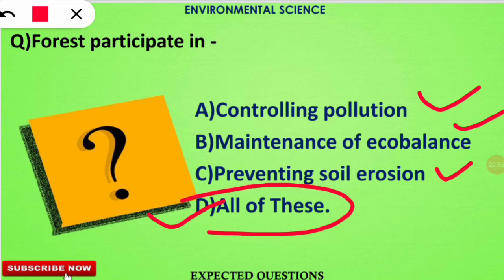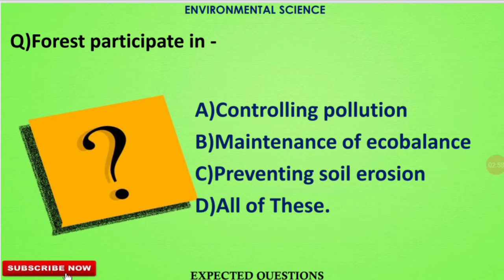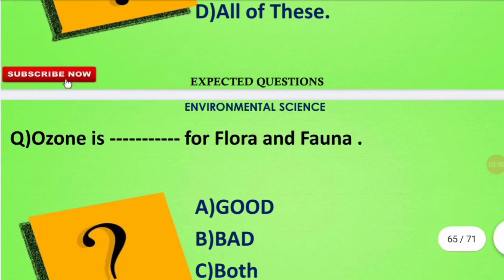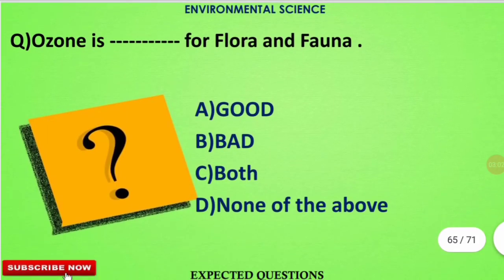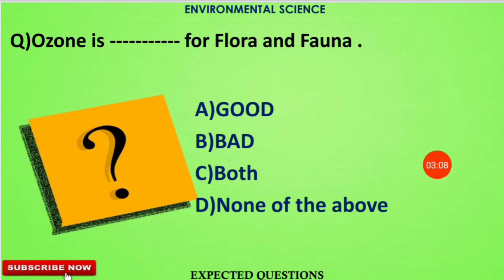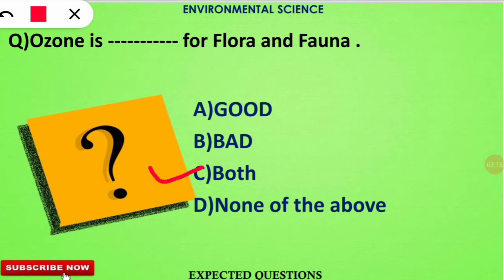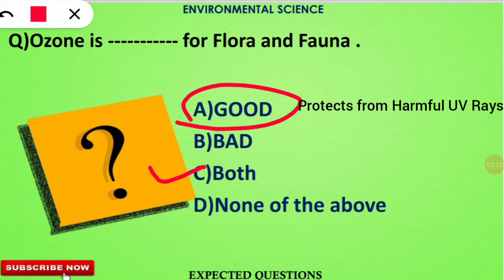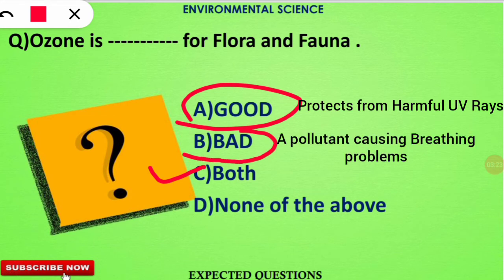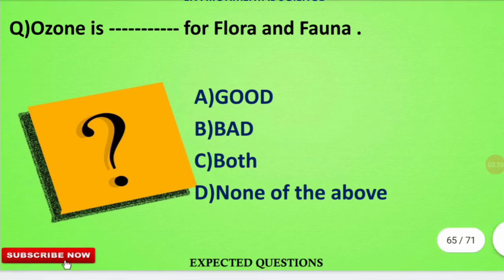The next question is: ozone is what type of gas for flora and fauna? The correct option is C. If ozone is present in the stratospheric region it is beneficial, but if it is present in the troposphere then it is bad for our lungs and causes environmental problems.